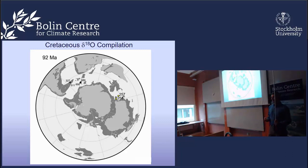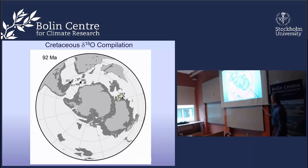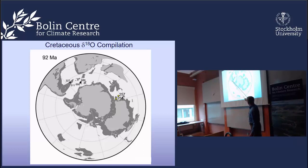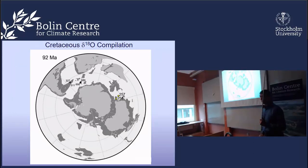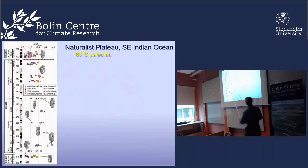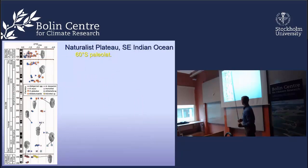The locations where we're getting our temperature curves are shown on a map reconstructed for 92 million years ago. Australia is up against Antarctica, India is in the southern Indian Ocean, here is Kerguelen Plateau, and South America and Africa are also closer to Antarctica. All these sites were around 60 to 62 degrees south. I'll focus on two sites in the southeast Indian Ocean, drilled in 1972 by the Deep Sea Drilling Project, though the drilling was incomplete, leaving gaps in the record.